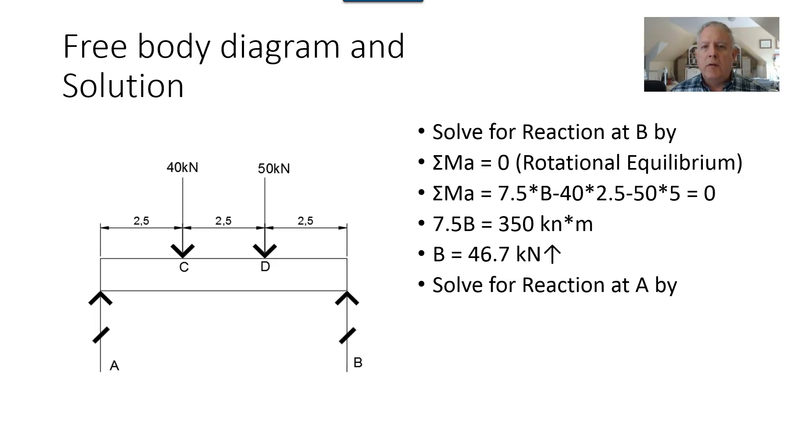So next we're going to solve for the reactions at A by vertical equilibrium. Sum of the forces in the y direction equals zero. So setting it up, we need to include each force or reaction A plus B. I like to start with the positives and upward acting forces are going to be assumed positive minus 40 minus 50 equals zero.